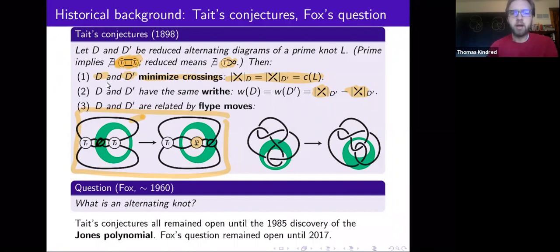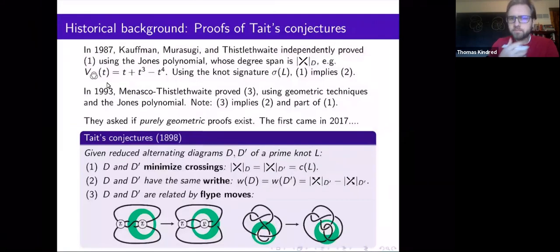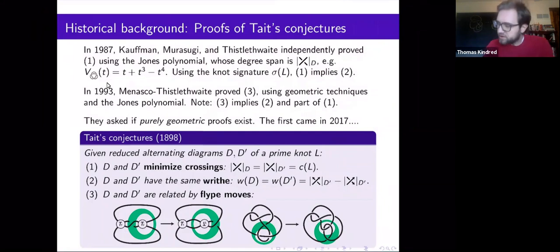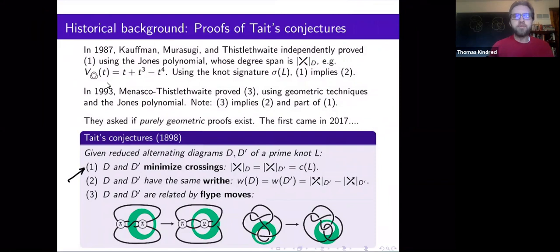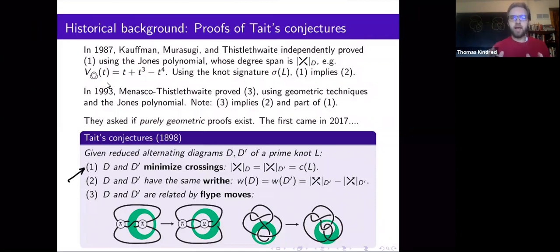That question too remained open for quite a long time and was solved recently independently by Howie and Greene. The Tait conjectures were proven using the Jones polynomial in the decade after its discovery. The first Tait conjecture — that reduced alternating diagrams minimize crossings — is probably the one that follows most beautifully from the Jones polynomial. The idea is very simple: if you have any diagram and you compute the Jones polynomial from it, the degree span is going to be at most the number of crossings in that diagram.